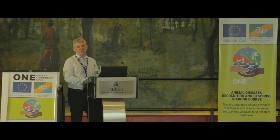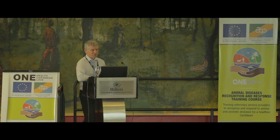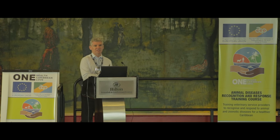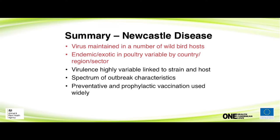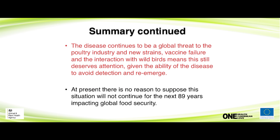To summarise: there is a wild bird reservoir, and the virus can be present in other populations that come into closer contact with poultry, such as the columbiforms. Virulence is very much linked to the strain but will also depend on the host affected. There is a spectrum of outbreak characteristics, but we do have good preventative and prophylactic vaccines. We've lived with Newcastle disease since 1926, when it was first described by Doyle in Newcastle — that's where the name came from. Even with extensive vaccination largely controlling the problem, there's no reason to suppose the situation will change over the next many decades.